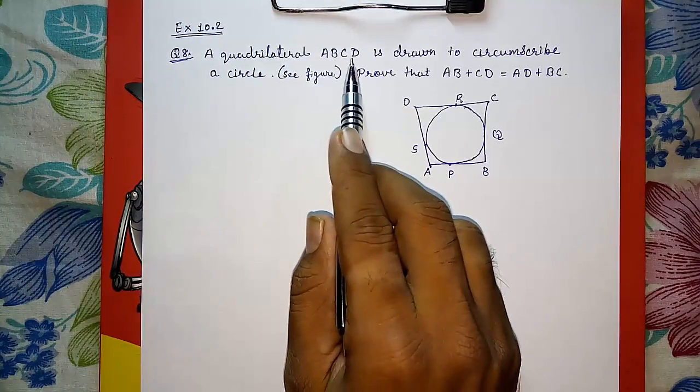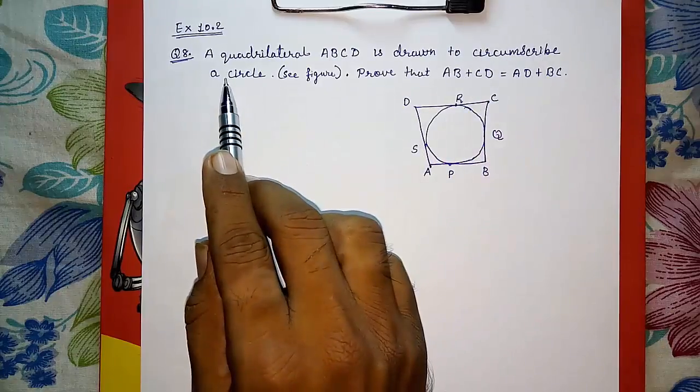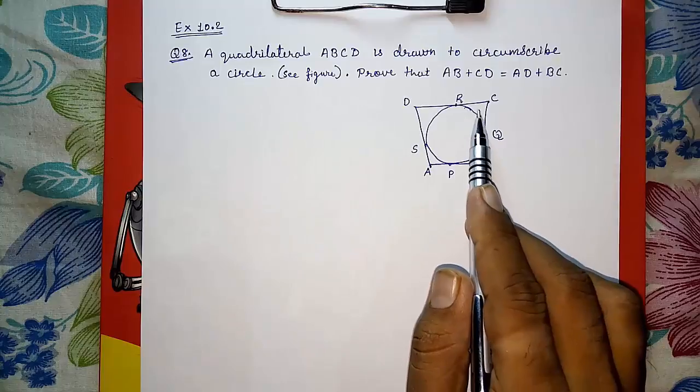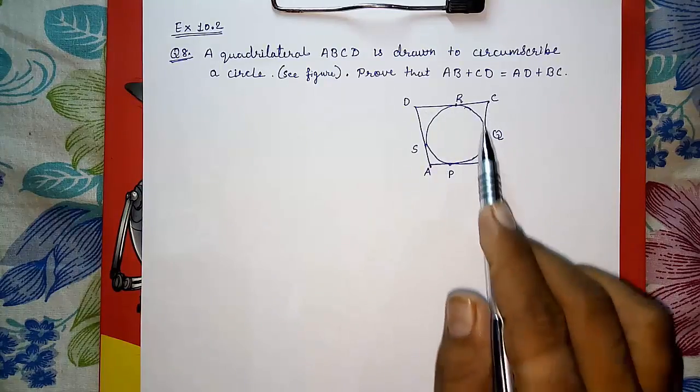A quadrilateral ABCD is drawn to circumscribe a circle. See the figure. A quadrilateral ABCD circumscribing a circle.